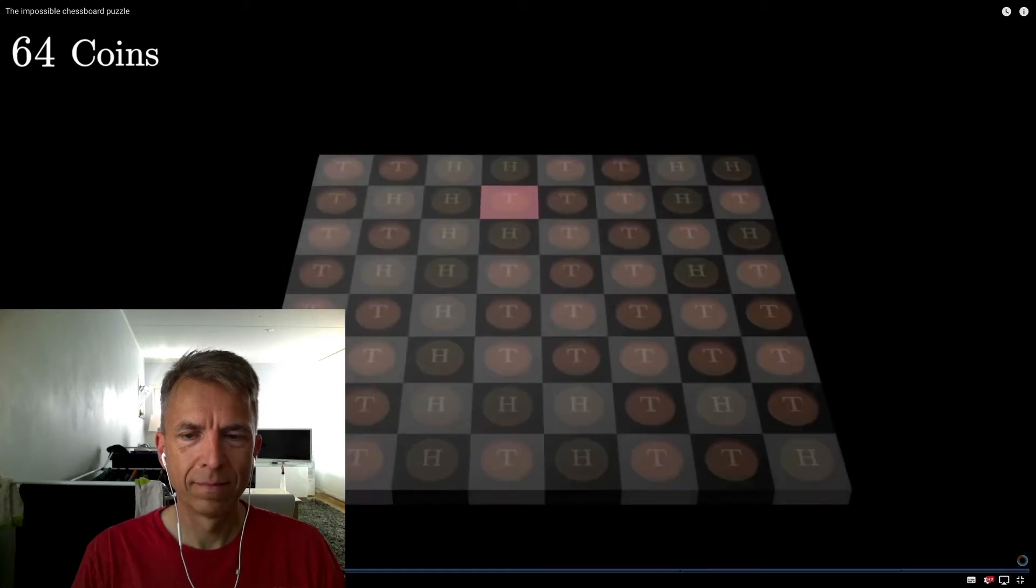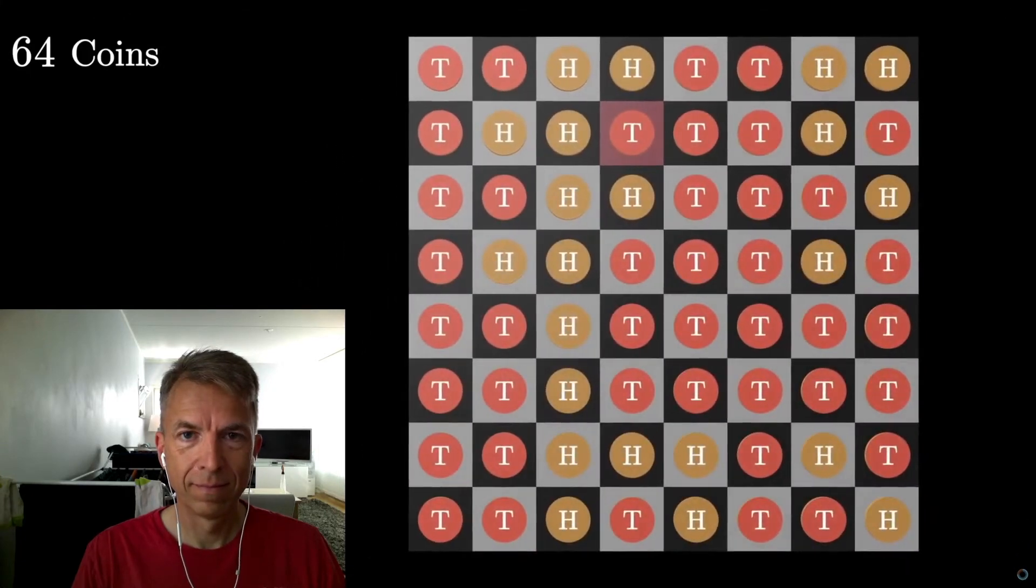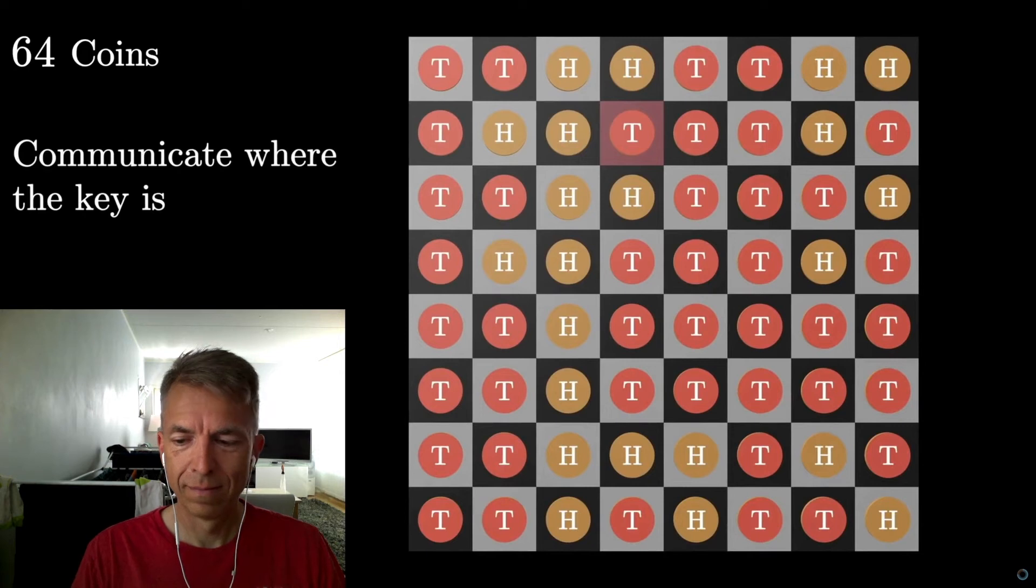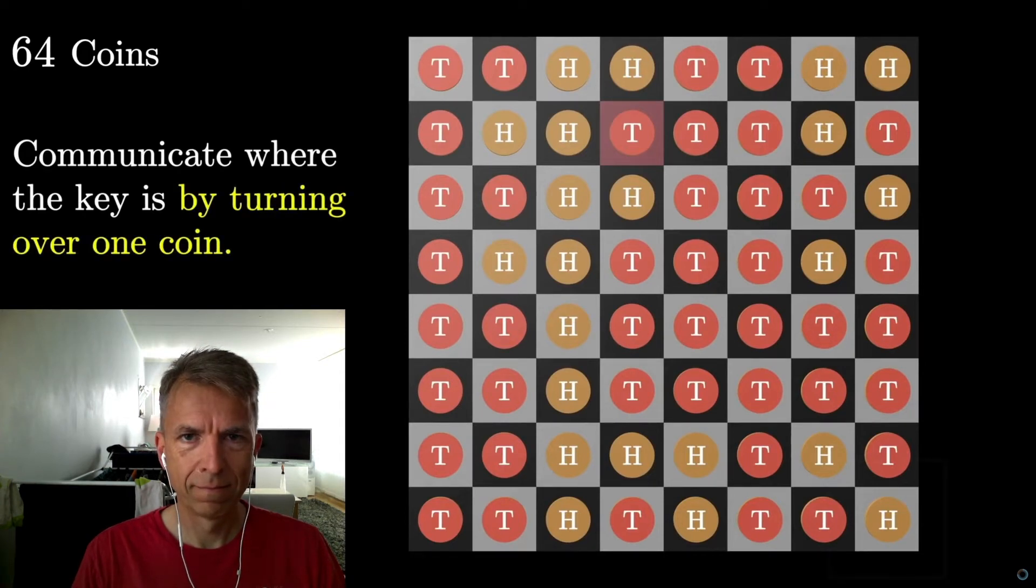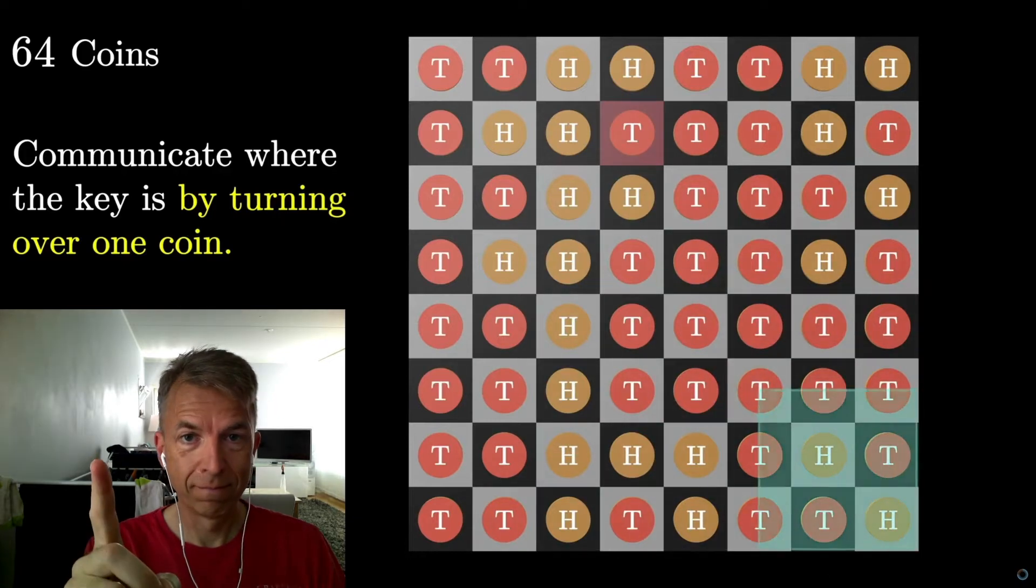So you know where the key is, and the goal is going to be to get prisoner number two to also know where the key is. But the only thing that the warden allows you to do before you leave the room is to turn over one and only one of these coins.